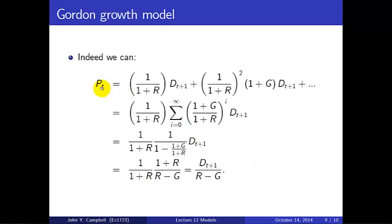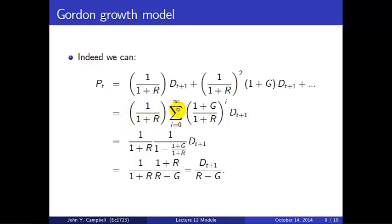So how do we calculate the price? The price is the discounted dividend tomorrow plus the two-period discounted expected dividend, which is (1+g)·D_{t+1}, and so on. As we move forward in time we're multiplying each term by 1/(1+R) and by (1+g), so powers of (1+g)/(1+R) keep growing. I can rewrite that by factoring out the first 1/(1+R), leaving an infinite sum of ((1+g)/(1+R))^i times D_{t+1}. The trick is to evaluate this infinite geometric series.